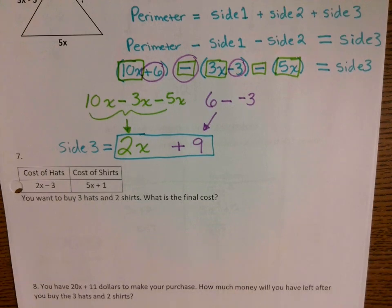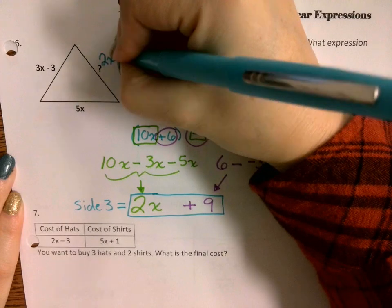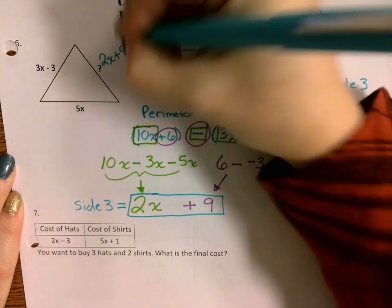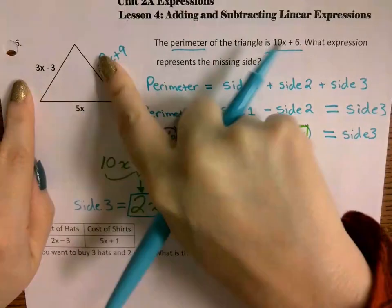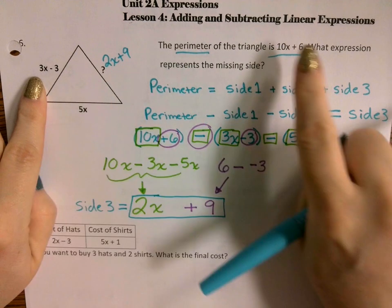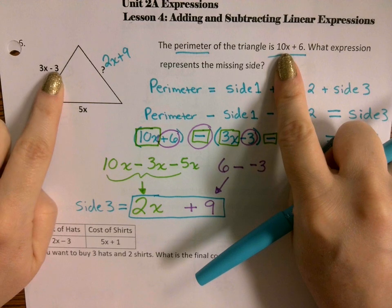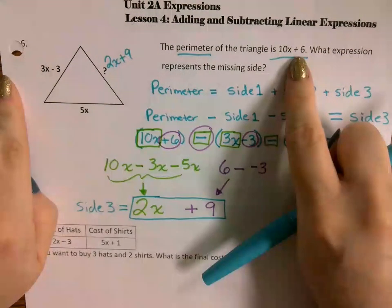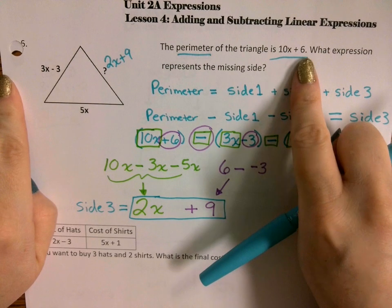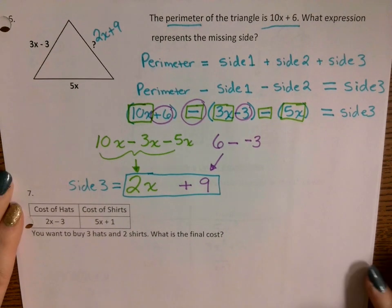That makes sense — if we add 3x plus 2x plus 5x we get 10x, and negative 3 plus 9 plus 0 gives positive 6, so we get back to the perimeter 10x plus 6. Confirmed.